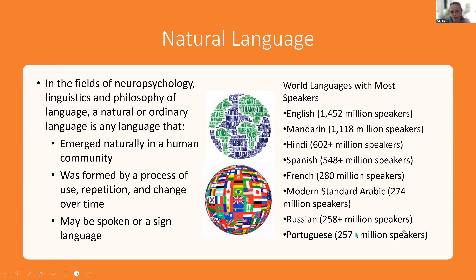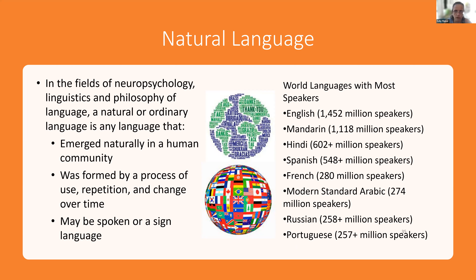There are a number of world languages, many of which you undoubtedly recognize — English, Mandarin, Hindi, Spanish, French, Modern Arabic, Russian, and Portuguese are just a few examples of languages we speak in the world today. We're going to contrast these natural languages with the formal language. Formal languages are what we need to use to communicate with computers, not really amongst human beings.